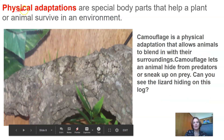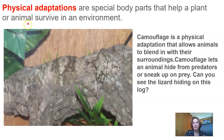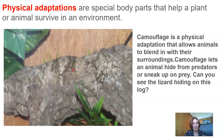Physical adaptations are special body parts that help a plant or even an animal survive in its environment. Camouflage is the first adaptation we are going to look at. It is a physical adaptation that allows animals to blend in with their surroundings. Camouflage lets an animal hide from predators or even allows it to sneak up on its prey. Can you see the lizard hiding on this log? Very difficult to see — take a closer look.